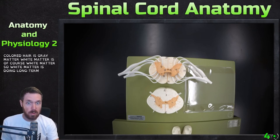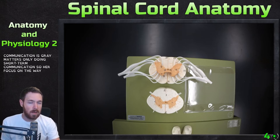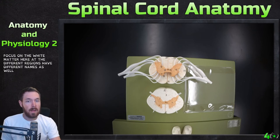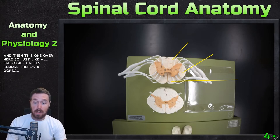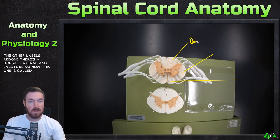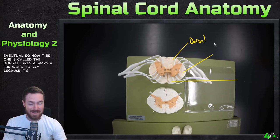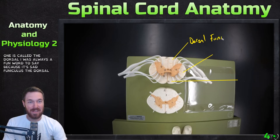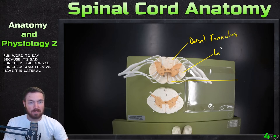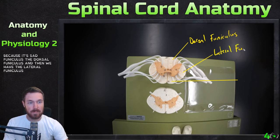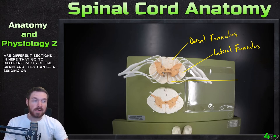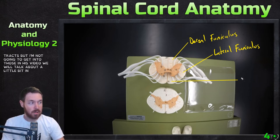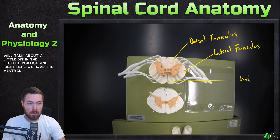White matter is doing long-term communication, as gray matter is only doing short-term communication. The different regions of white matter have different names as well. This one right here is called the dorsal funiculus — it's always a fun word to say, funiculus. And then we have the lateral funiculus. There are different sections in here that go to different parts of the brain and can be ascending or descending tracts, but I'm not going to get into those in this video. And right here we have the ventral funiculus.